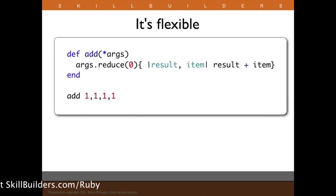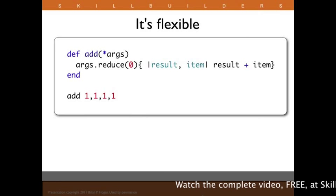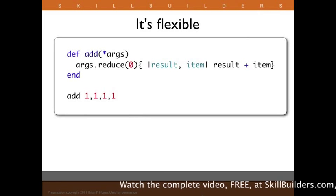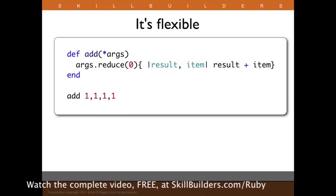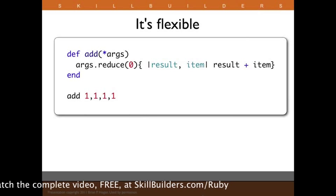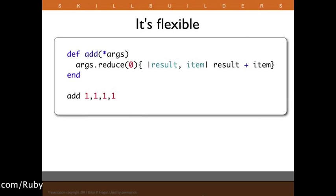Ruby is also a flexible language. Languages like functional programming have concepts like reduction, and so we can create methods that take a series of arguments and do complex work on them. This is a simple example of doing something like addition where we take an indeterminate number of entries in an array and add them together. We can also use Ruby to create our own languages on top of Ruby — our own domain-specific languages — because of its flexibility.